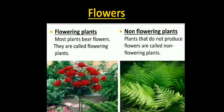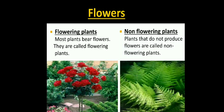As we know, flowers are the most beautiful parts of the plant. Flowers differ in color, shape and size. Flowers grow singly or in bunches. There are two types: flowering plants and non-flowering plants. Most plants bear flowers; they are called flowering plants. Plants that do not produce flowers are called non-flowering plants.